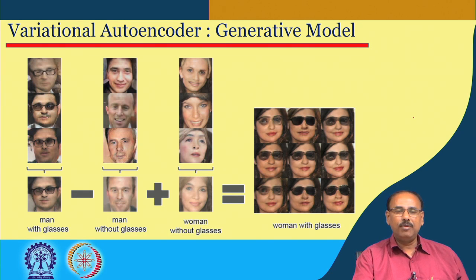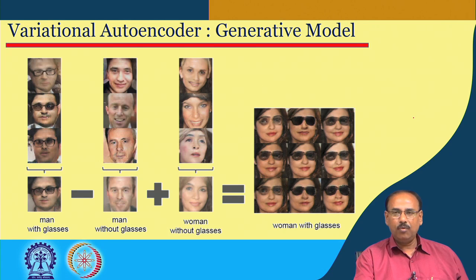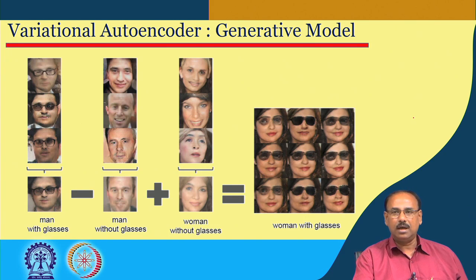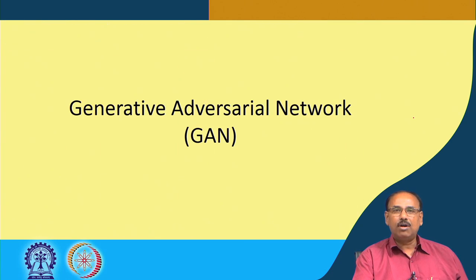To demonstrate: we had images of men with glasses and images of men without glasses; subtracting gives the latent code for glasses. Then we have images of women without glasses; adding the glasses latent code to the women's latent code and feeding this to the generator network outputs faces of women with glasses. This is a nice trick where we can play with latent codes in the latent space to generate output data in various combinations.